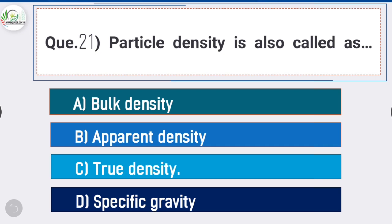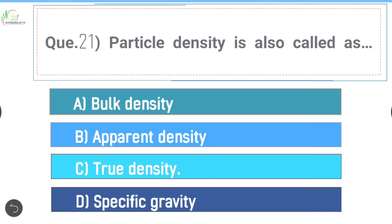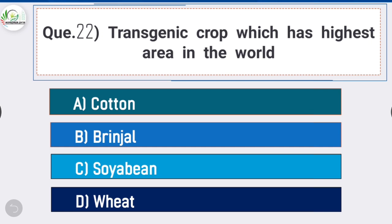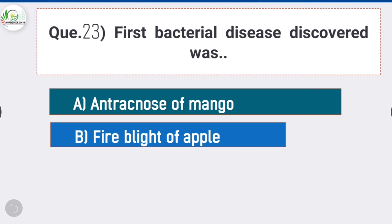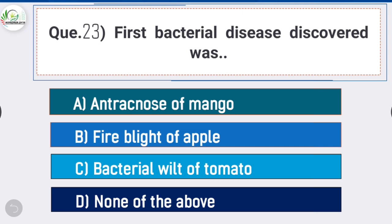Question number twenty-one: particle density is also called as - answer is option C - true density. Particle density is also called as true density. Question number twenty-two: transgenic crop which has highest area in the world - answer is option C. Question number twenty-three: first bacterial disease discovered was - answer is option B - fire blight of apple.